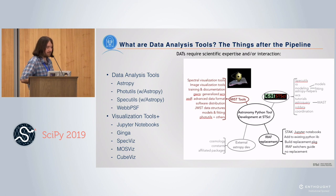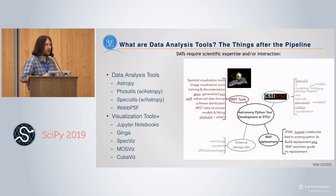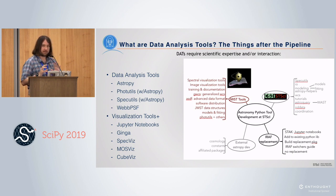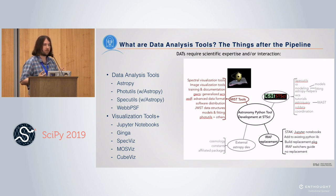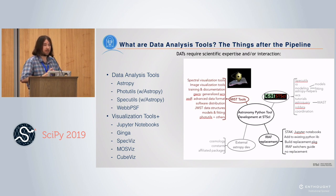On the left of this slide you can see key elements of these data analysis tools — I'll go through several of them. On the right is a more haphazard chart showing all the different ways, just within the JWST Space Telescope ecosystem, that different pieces of these software tools interact with each other. So even though I'll present a few specific items, there's really a whole ecosystem even within the astronomy community, much less the wider ecosystem you all represent.